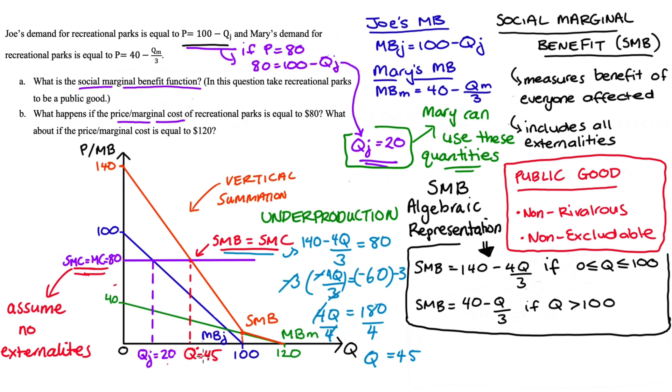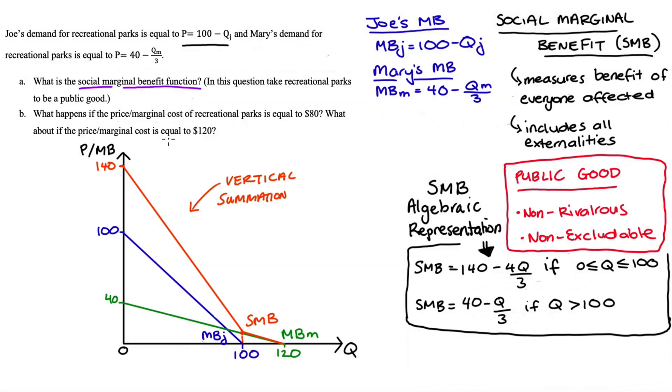And so clearly then you can see Joe's purchasing of 20 recreational parks would definitely be in under production. Now the next case where our price marginal cost is 120 will give us another example of under production but it will be more severe.